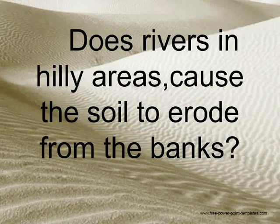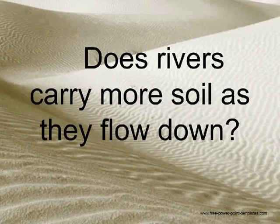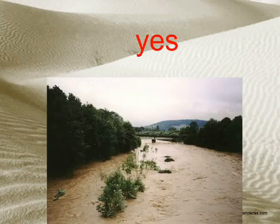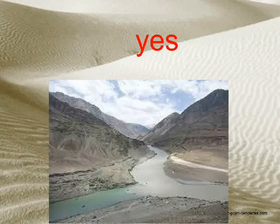Rivers in hilly areas cause the soil to erode from the banks. Rivers carry more soil as they flow down. Yes, and the deposited soil can cause the river to change its course.